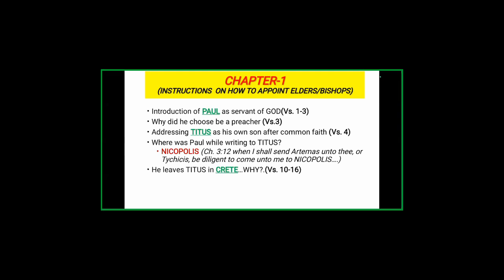In verse three we understand why Paul has chosen to be a preacher. In the times when Jesus was on earth, Jesus used preaching to manifest the word of God. Paul reads: 'He hath in due times manifested his word through preaching, which is committed unto me according to the commandment of God our Savior.' So Paul chose to be a preacher following the example of Christ — he is a servant of God, acknowledging the truth, and a preacher because Christ himself chose to preach.